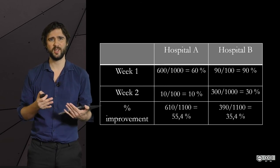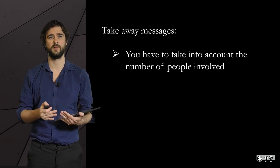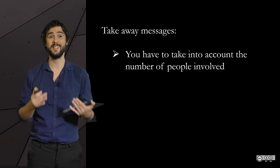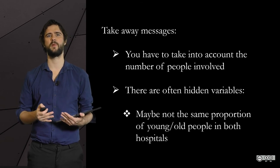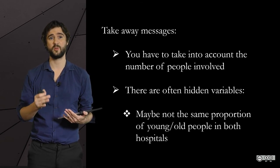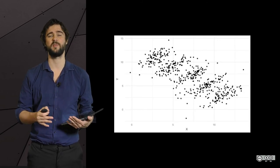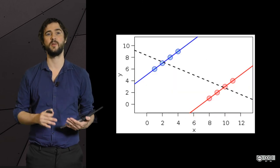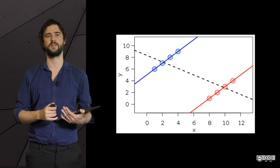Here are a few takeaway messages. You have to take into account the number of people involved — the number of individuals — not just the proportions. And there are often hidden variables; maybe it was not the same proportion of young and old people in both hospitals. The next step is to understand how it translates into graphs, since you can detect a Simpson's Paradox just by looking at the shape of data — but we'll let you search online and look for videos if you want to reach that level of understanding.